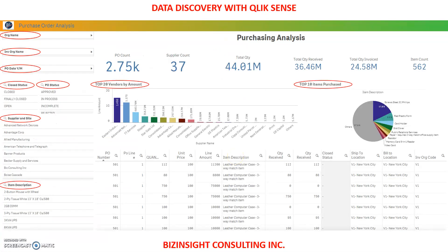In the second page, we are displaying the purchasing analysis. On the left-hand side, we have various filters for organization, inventory org, PO status, supplier and sites, and items. These filters will help us narrow down our search very specifically to a status, item, supplier, site, or org.